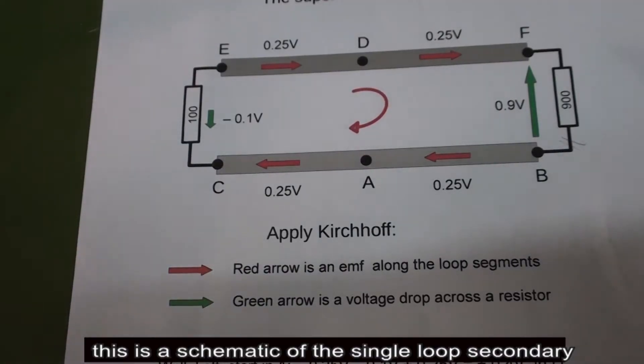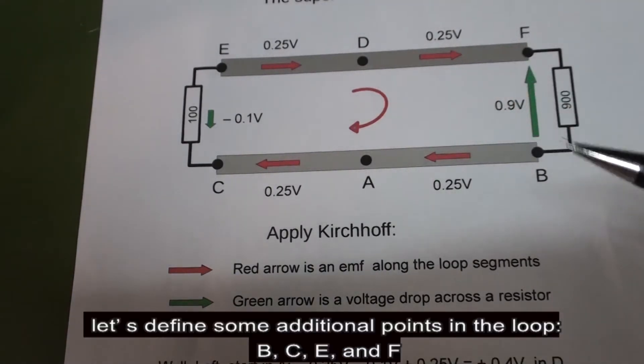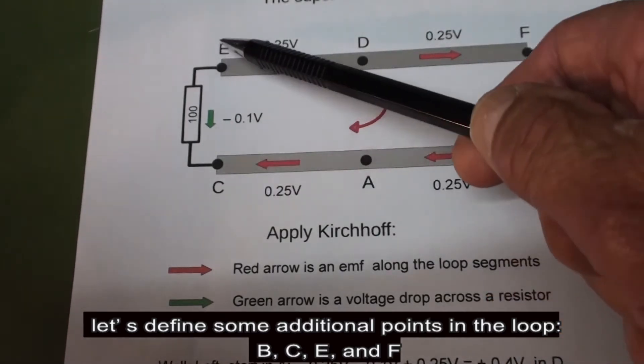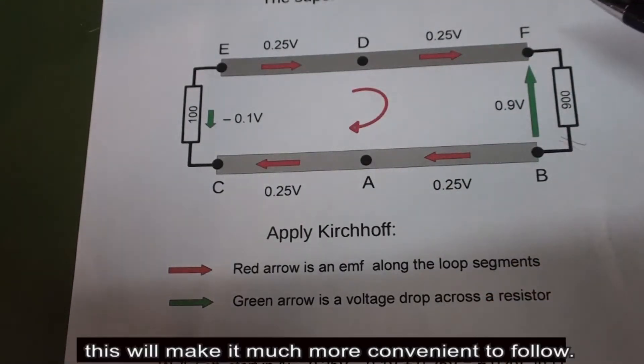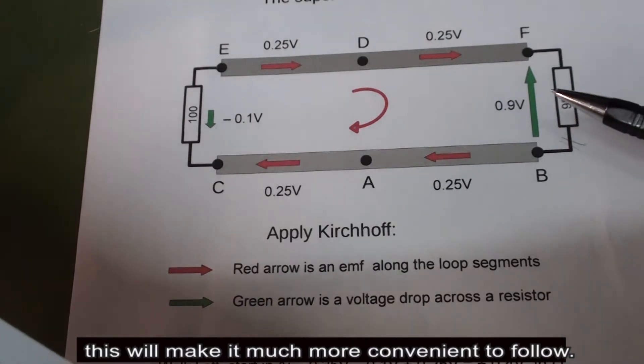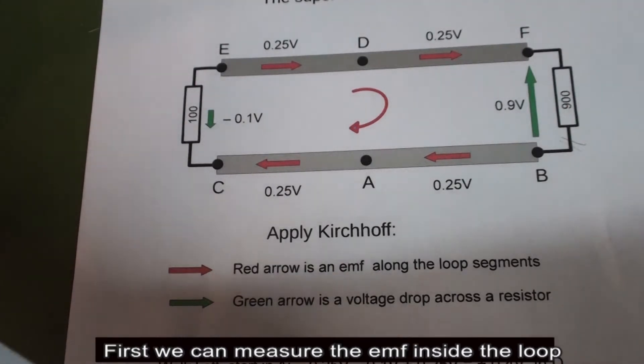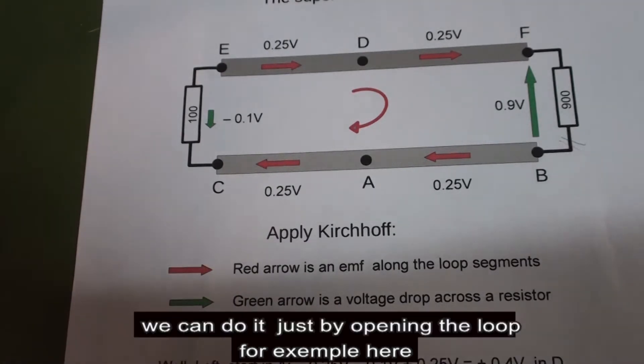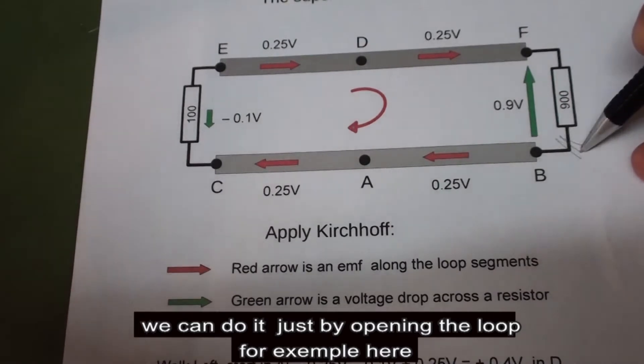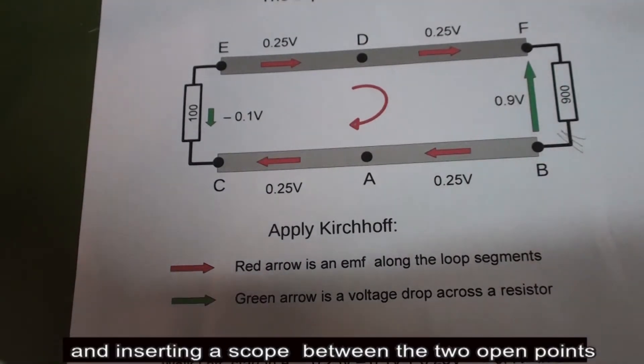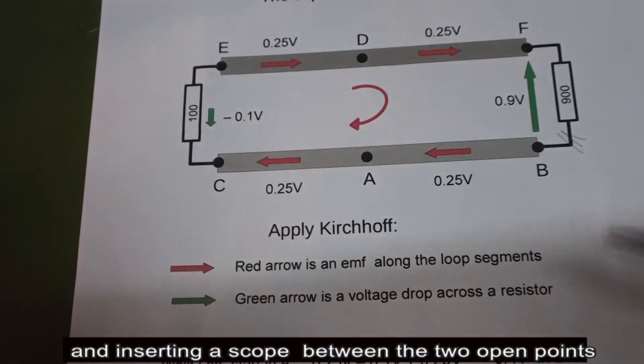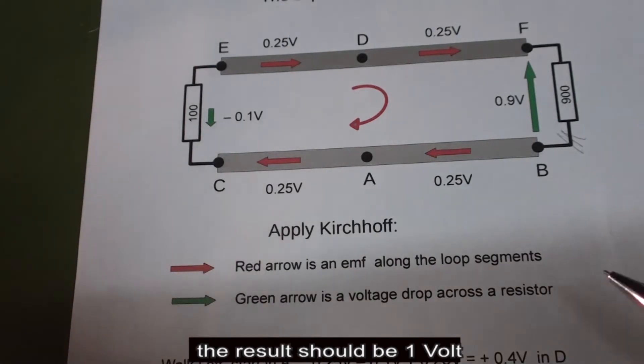This is my single loop secondary. You see when I approach the primary winding, an EMF is induced in this single loop. This is the schematic of the single loop secondary. Let's define some additional points in the loop, for example B, C, A, and F. This will make it much more convenient to follow. First of all we can measure the EMF inside the loop by opening it, for example here, and inserting an oscilloscope or voltmeter between the two open points. The result should be 1 volt.